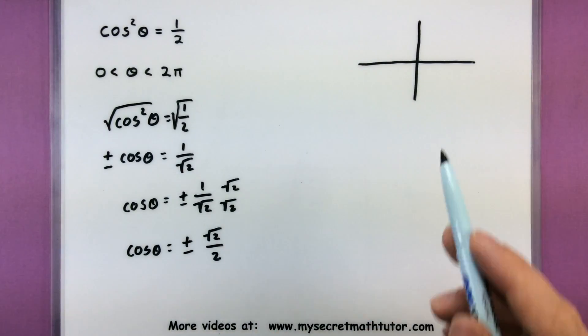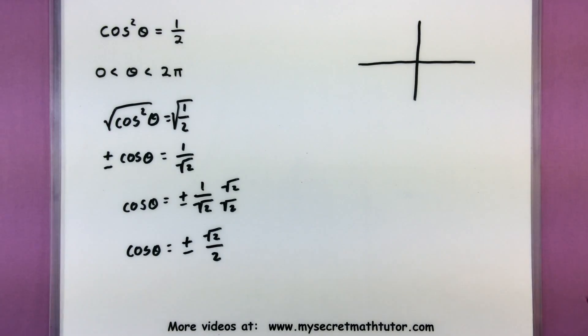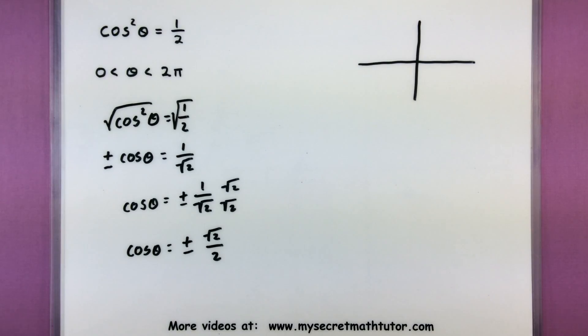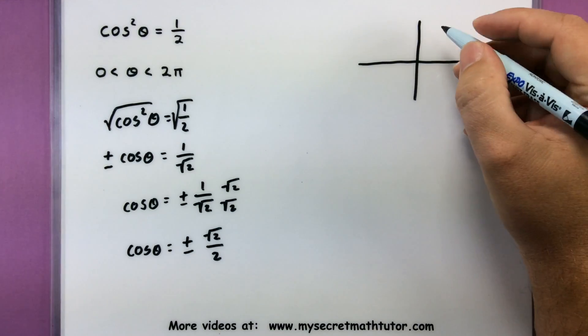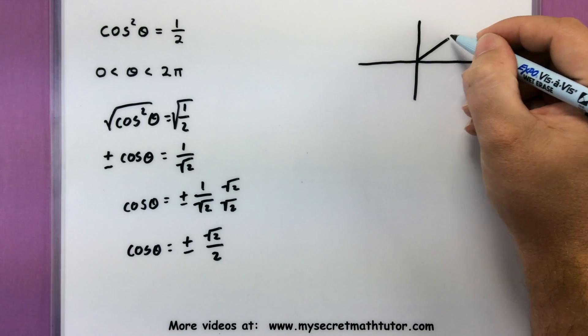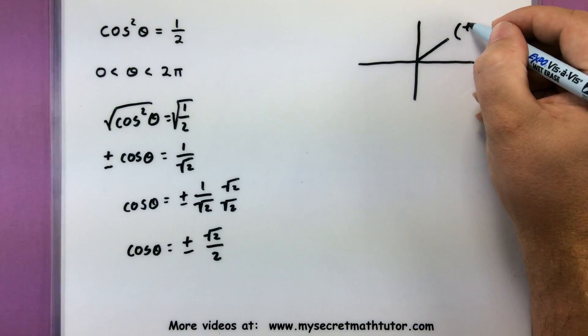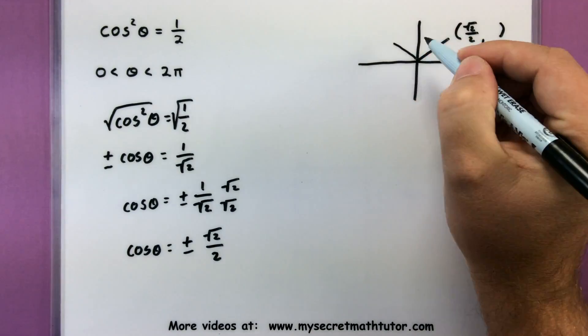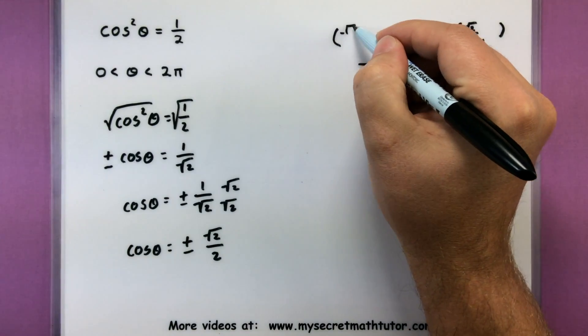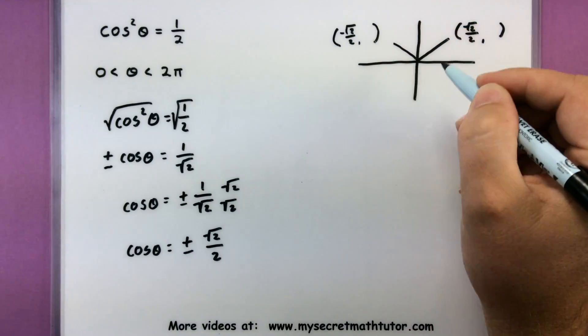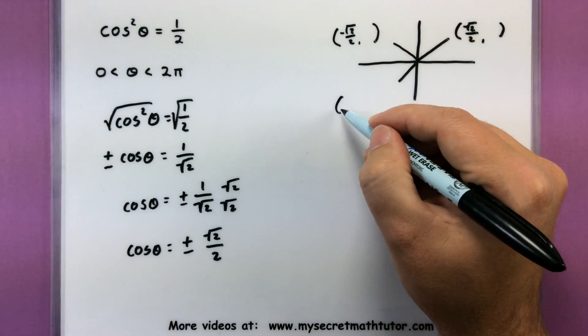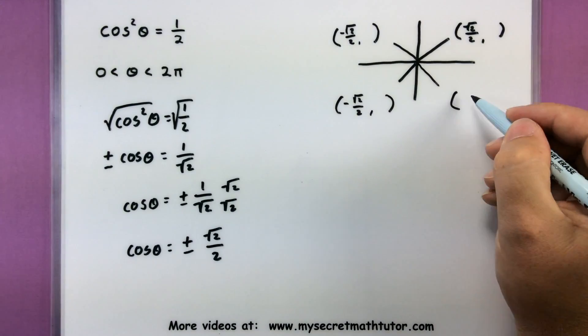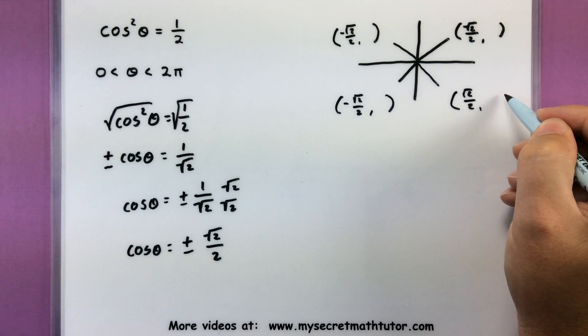All right. Now we can turn our attention over to our unit circle. And now we're looking where every first coordinate is square root of 2 over 2 or whether it's a negative square root of 2 over 2. So let's think of the values we'd get on there. So let's see. I have one angle up here that'd be square root of 2 over 2. I have another angle over here that'd be at negative square root of 2 over 2. We have one down here, negative square root of 2 over 2. And one more, square root of 2 over 2. Done.